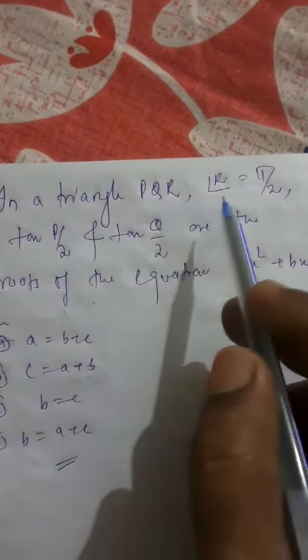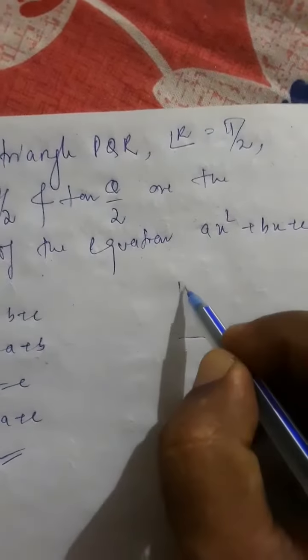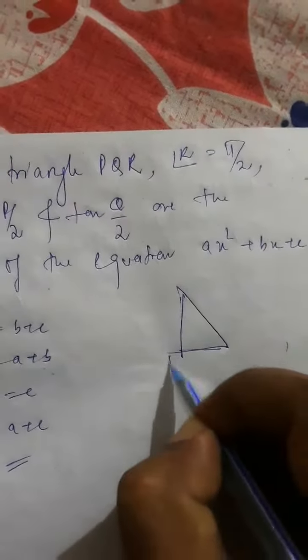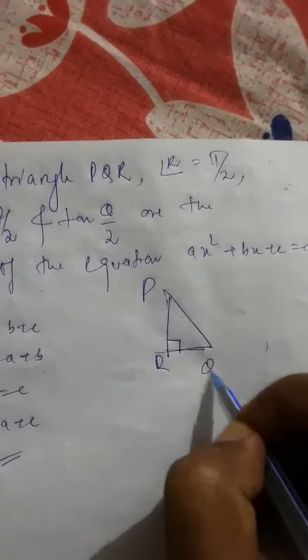The question says in the triangle PQR, angle R is 90 degree. So let's draw this triangle. This is R which is 90 degree, this is P, and this is Q.